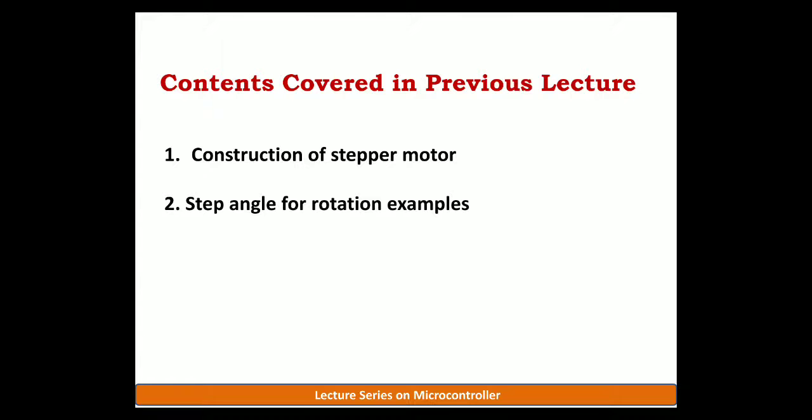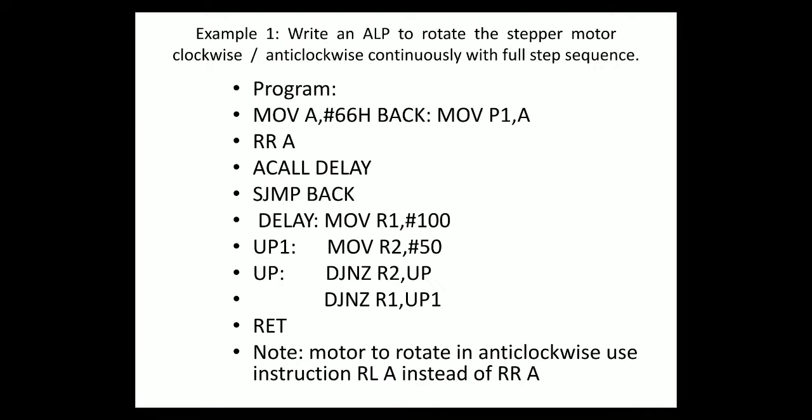So let us go to the programs of this 8051. The first one: write an ALP to rotate the stepper motor clockwise as well as anticlockwise continuously with the full step sequence. In the previous video lecture series, we have gone through the full step sequences and how they can be performed. The same concept is used here for writing programs. MOV A, comma hash 66. Why is 66 used here? You can observe the first step angle used for the full step sequence. If I write 66h in binary notation: